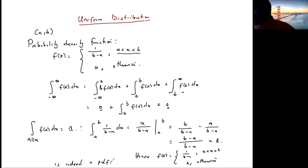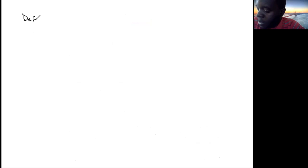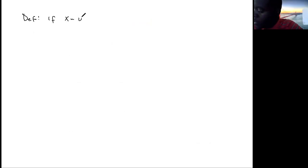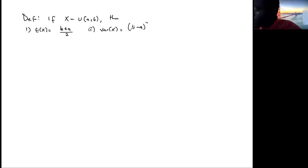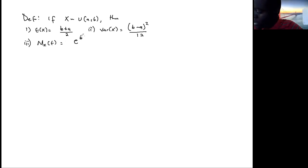Now that we have verified the probability density function, we move on to the expectation, variance, and moment generating function. If X follows a uniform distribution from a to b, then the expectation of X is (b plus a) over 2, the variance of X is (b minus a) squared over 12, and the MGF is e to the power bt minus e to the power at, all over t(b minus a).